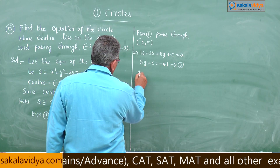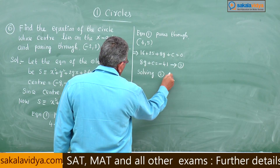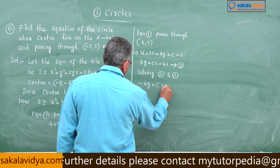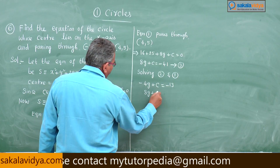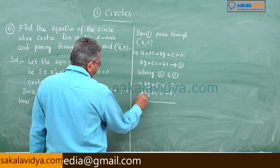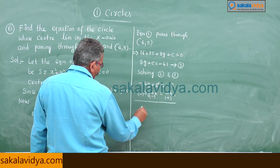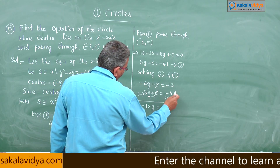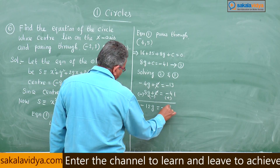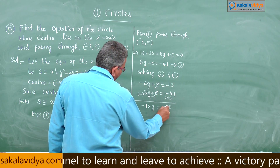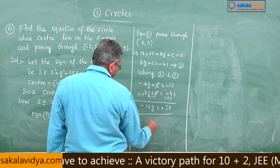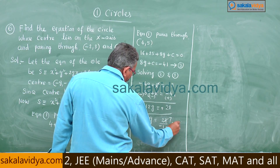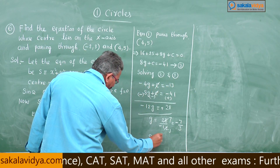Solving equations 2 and 3: minus 4g plus c equals minus 13, and 8g plus c equals minus 41. Subtracting, c cancels and we get minus 12g equals 28, so g equals 28 divided by minus 12, which simplifies to minus 7 by 3.